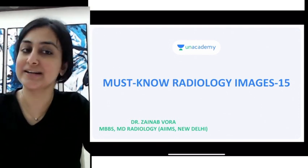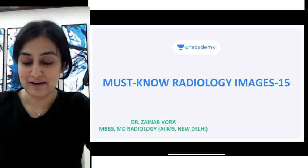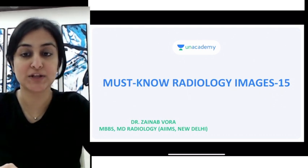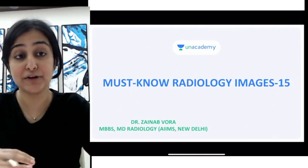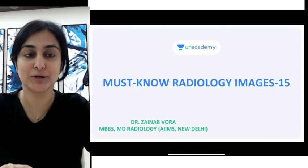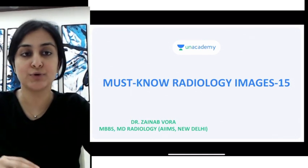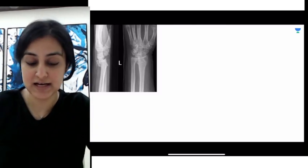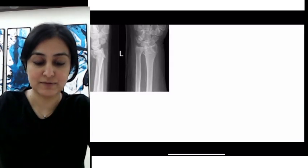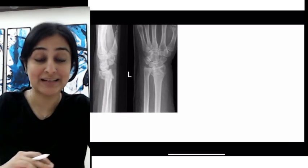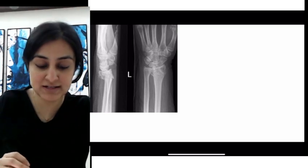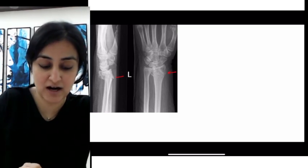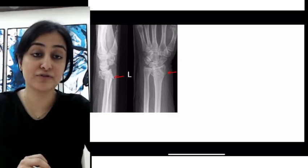The topic of today's discussion is going to be distal end of radius fractures. We want to look at 4 kinds of fractures which affect the distal end of radius. The first set of images I'm showing you is the AP and lateral view of the wrist, and what you find here is that there is an extra-articular fracture of the distal end of radius.